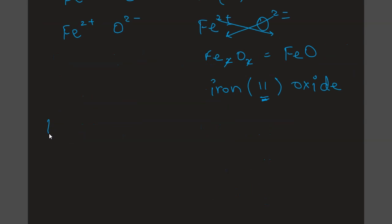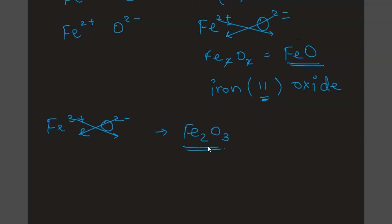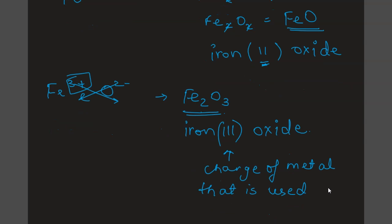Let's take the second iron example. If we have iron three positive and oxygen two negative and crisscross, we get Fe2O3. The molecular formula is totally different from when iron was taken as two positive. The name is iron, and in the bracket we put the charge of iron that was used — which is 3 — then oxide. So the name is iron(III) oxide. Remember, in the bracket goes the charge of the metal used to form the compound.